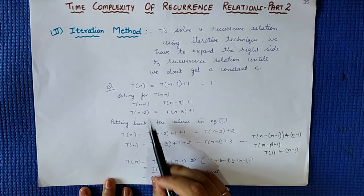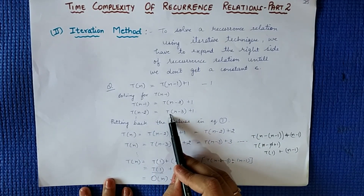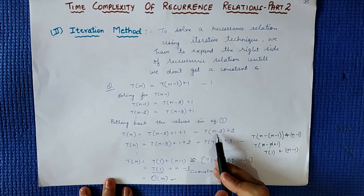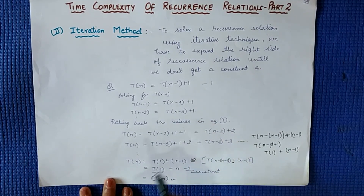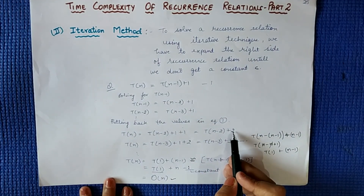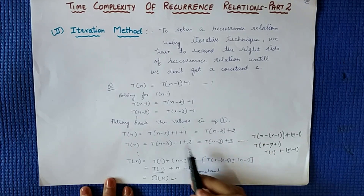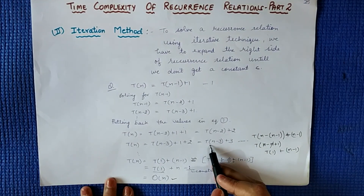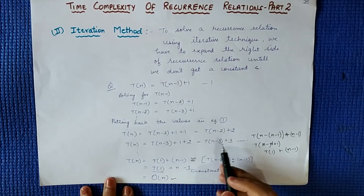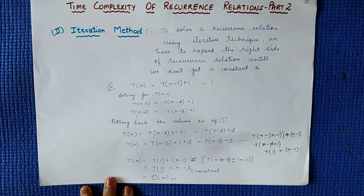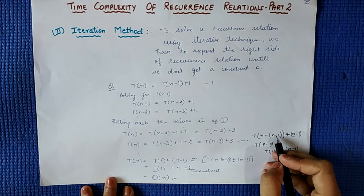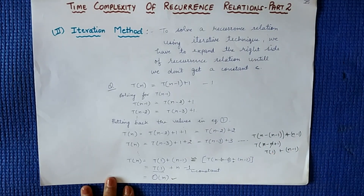Now, the value of T(n-2) that we found was T(n-3) + 1. Putting that value in place gives us T(n-3) + 1 + 2, so we get T(n-3) + 3. How long do we keep doing this? Up to the (n-1)th term.